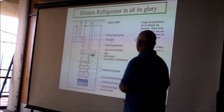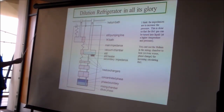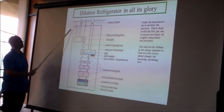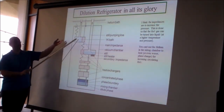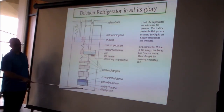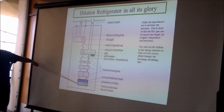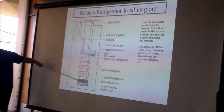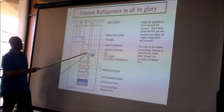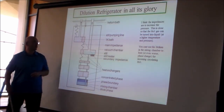Here is the full dilution refrigerator system. There is a 1K pot using simple helium-4 evaporative cooling — helium-4 comes in, evaporates, and leaves; it does not form a complete cycle. In the dilution refrigerator proper, a sample gives heat to the mixing chamber at 0.05 Kelvin. That heat causes helium-3 to cross from the concentrated to the dilute phase. Osmotic pressure drives helium-3 up through the tube, through the heat exchanger, progressively warming, then into the still at 0.7 Kelvin where it transitions from liquid to vapor.